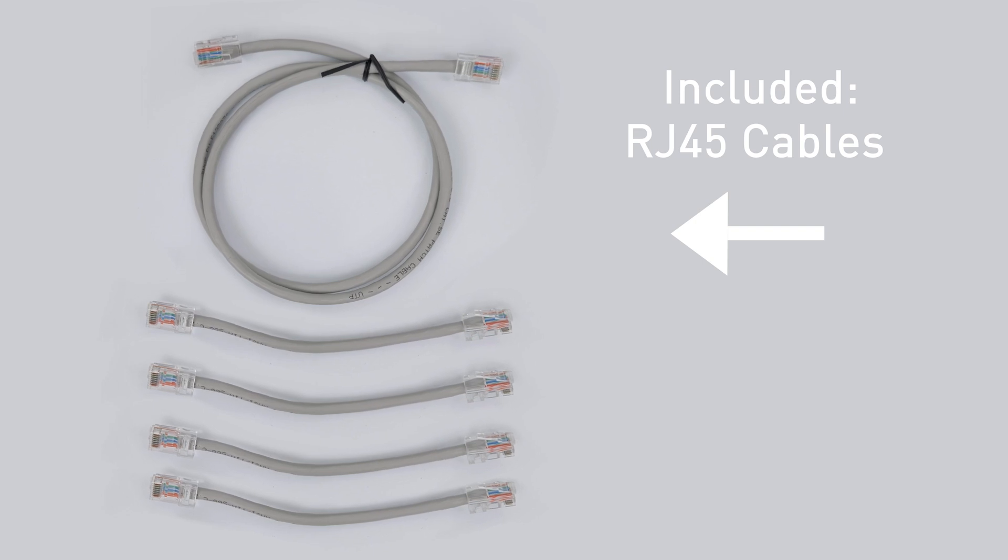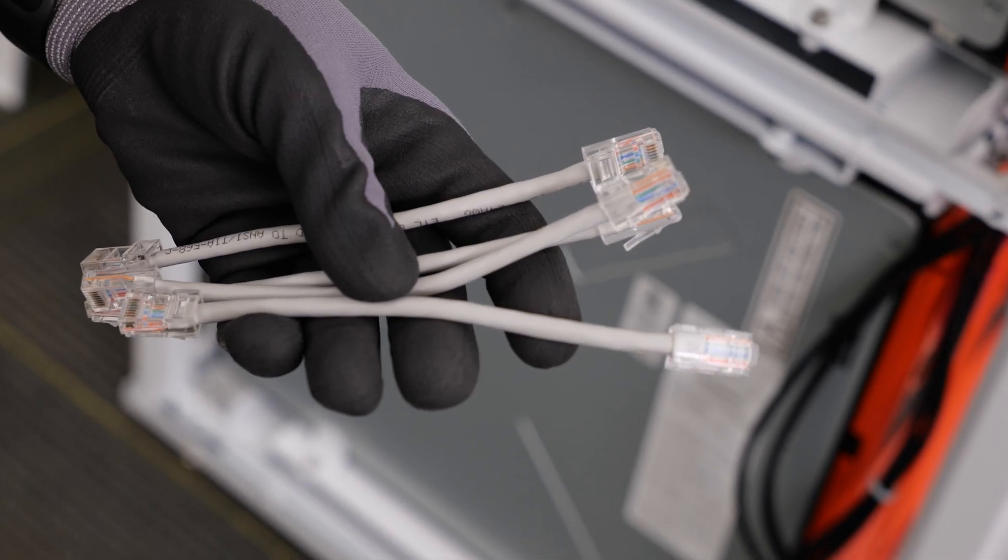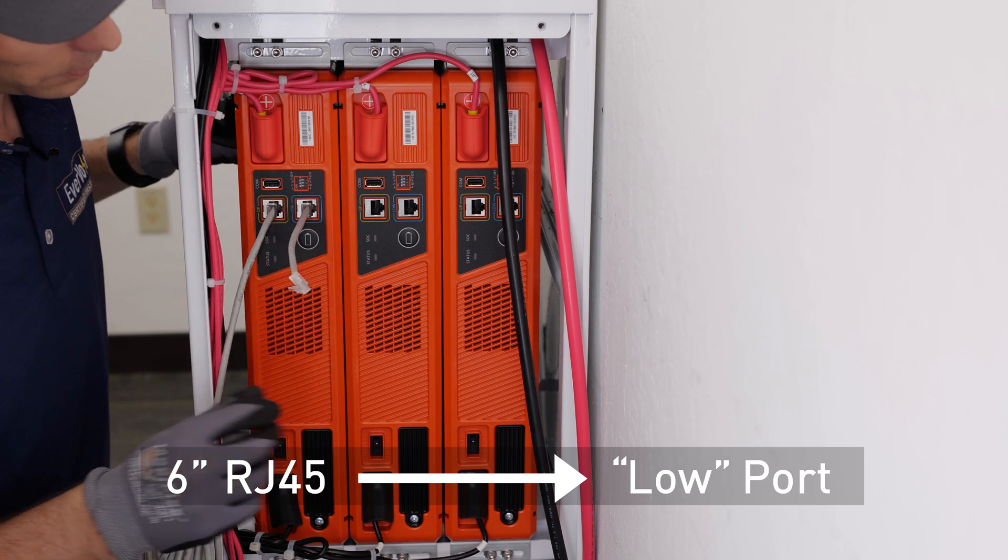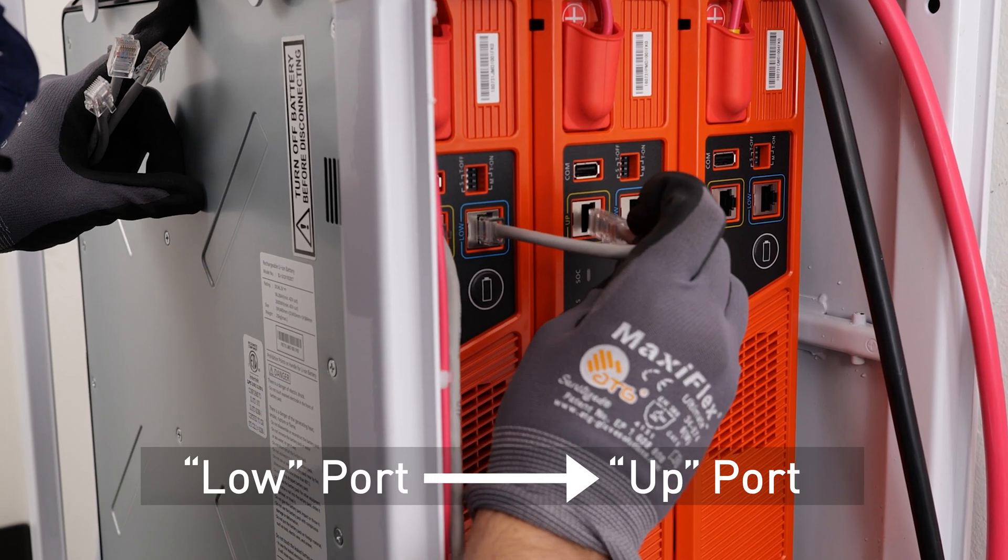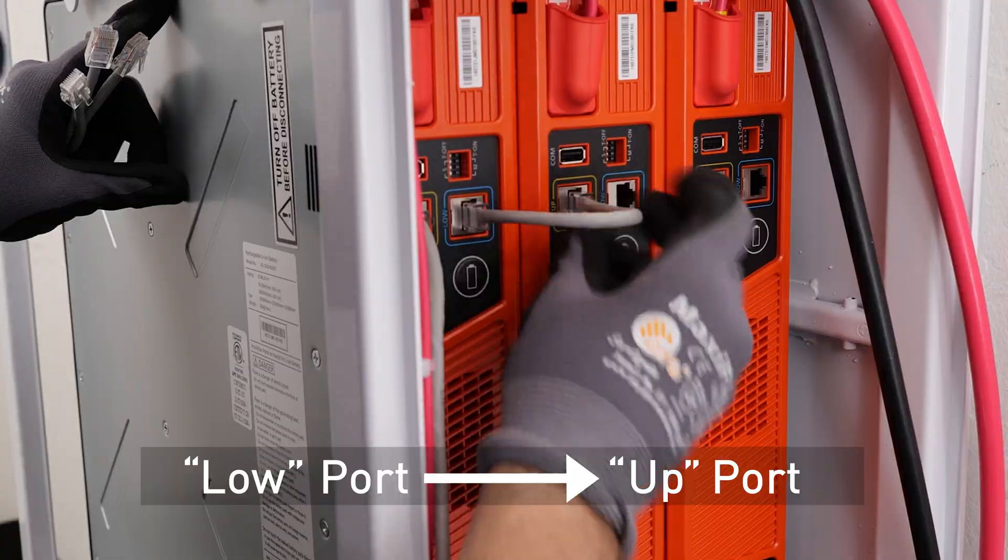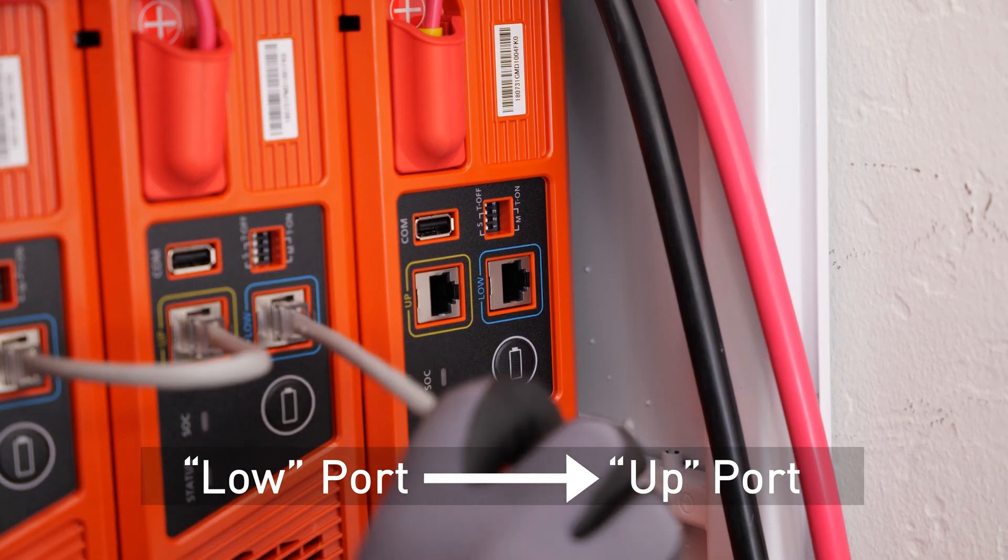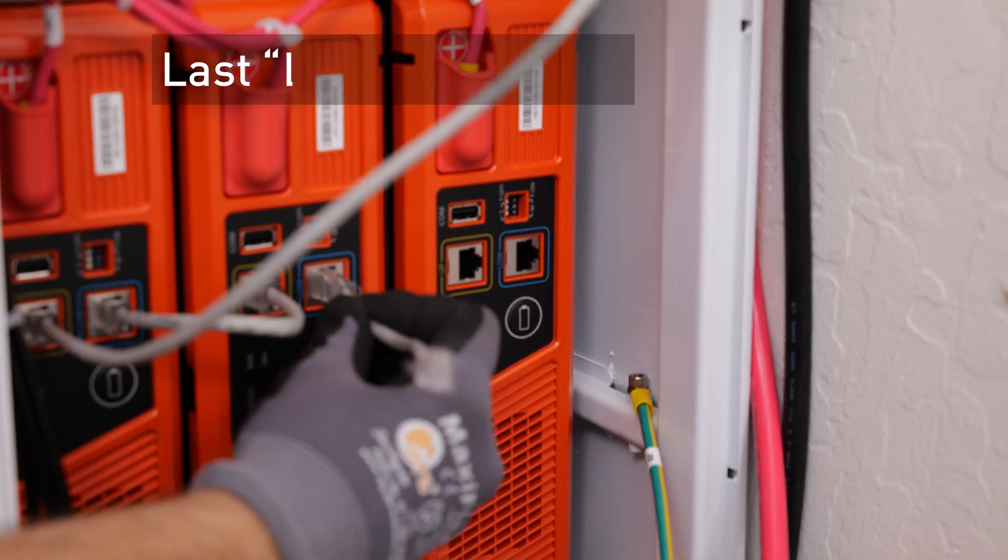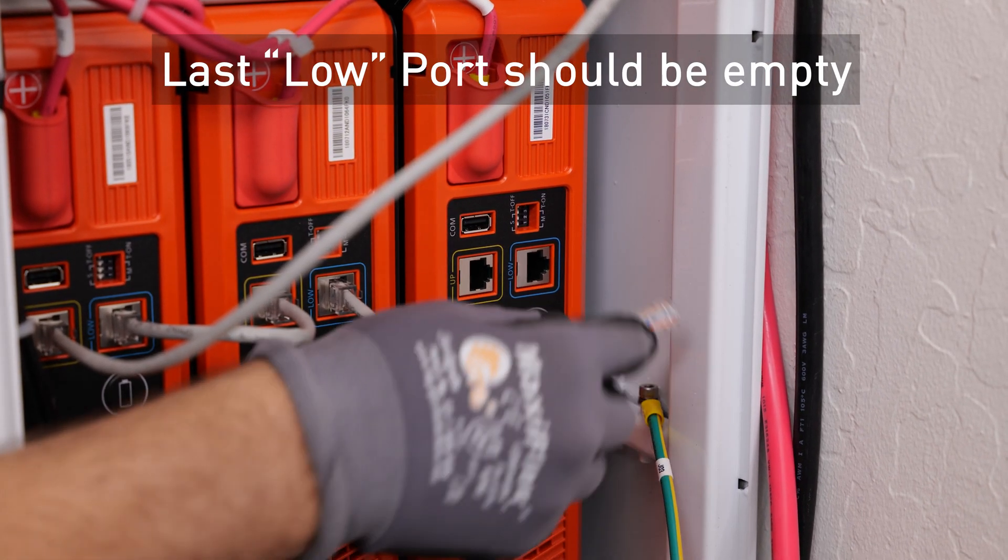Locate the supplied RJ-45 cables for the battery communication. Connect a 6-inch RJ-45 cable from the first batteries low port to the second batteries up port. From the second batteries low port, connect to the third batteries up port. Continue this cascade until the last battery where the last batteries low port should be empty.